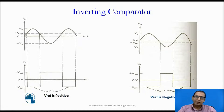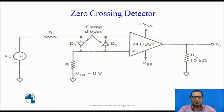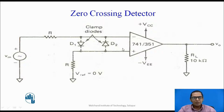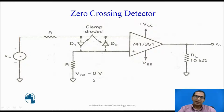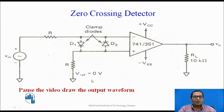A general comparator can be converted into a special comparator called the zero-crossing detector. This is the circuit of a zero-crossing detector — it is an inverting zero-crossing detector, because the variable VIN is connected to the inverting terminal and the fixed reference voltage is connected to the non-inverting terminal. The fixed voltage here is 0 volts, and that is why it is called the zero-crossing detector. Dear students, you can pause the video and draw the waveform relationship between the input voltage and the output voltage.